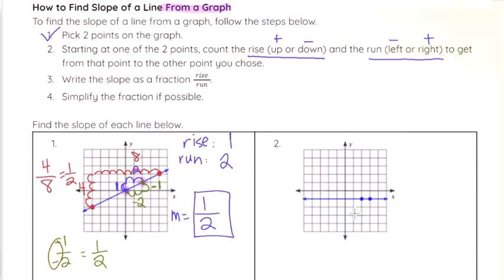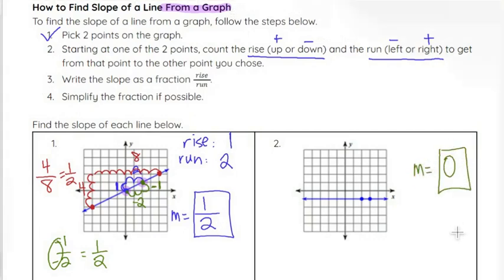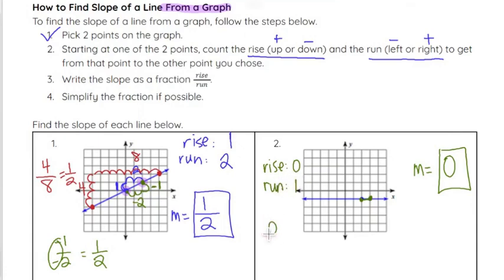On number two, you'll notice if it's a horizontal line like we talked about, zero is going to be your slope. If you pick any two points on that line, you'll notice we do not rise — our rise is zero because we don't go up or down to get to the other point. We just run, so we'd have zero over one, or zero over negative one, or zero over whatever number. Zero over one is zero. A horizontal line always has a slope of zero, or you can calculate it using rise over run.